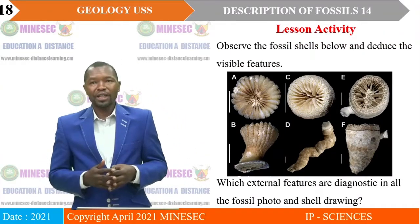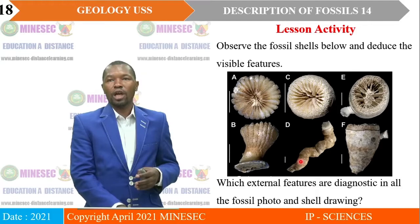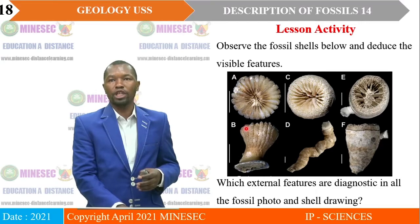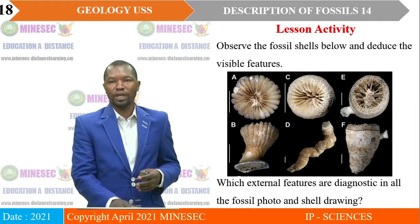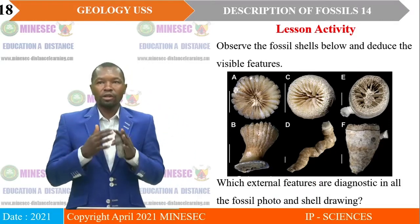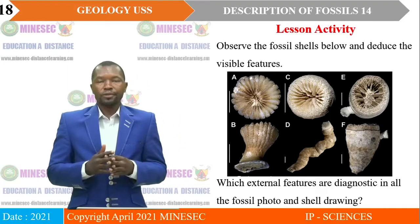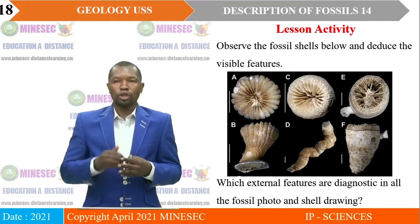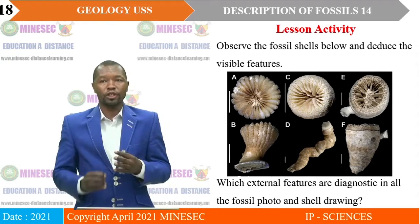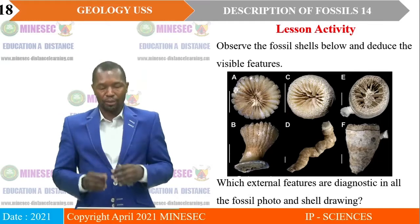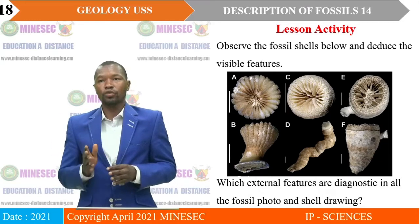For our lesson today, we shall take a look at fossil shells from A, B, C, D, E and F. While you observe them, you shall deduce the visible features. You should also be able to identify those features that are diagnostic in all the photos provided — from A to F.